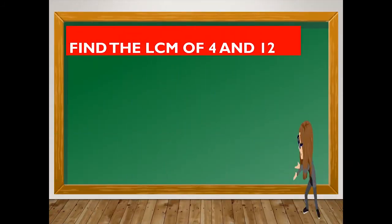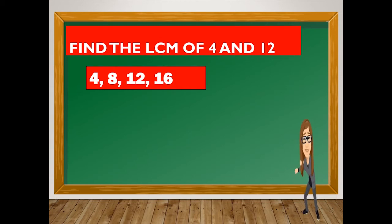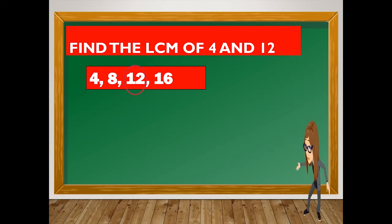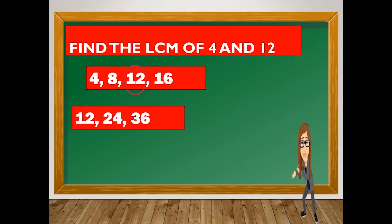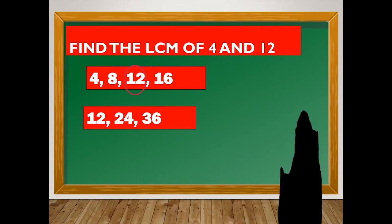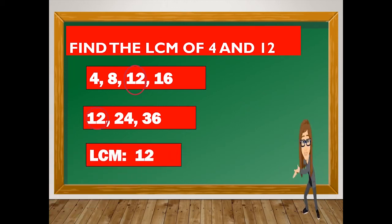Another example: we have 4 and 12. Under 4, we list: 4, 8, 12, 16. Under 12, we have: 12, 24, and 36. So what is the number they have in common? Yes, 12. The LCM of 4 and 12 is 12.